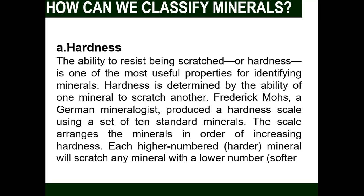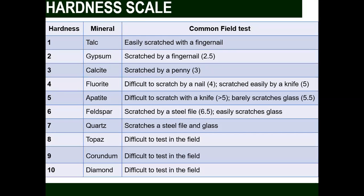Let's discuss the different ways to classify and identify minerals. First is hardness — the ability to resist being scratched. This scale was produced by Friedrich Mohs, a German mineralogist, using a set of 10 standard minerals. Number one is the softest and ten is the hardest. For example, feldspar, apatite, and quartz are in the middle of the scale. Quartz has a hardness of 7, while diamond is the hardest mineral on the scale. The softest mineral, with a hardness of 1, is talc.